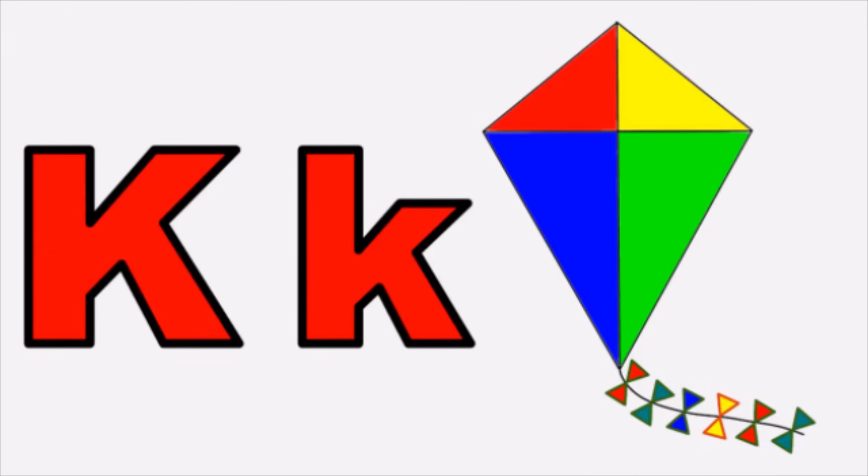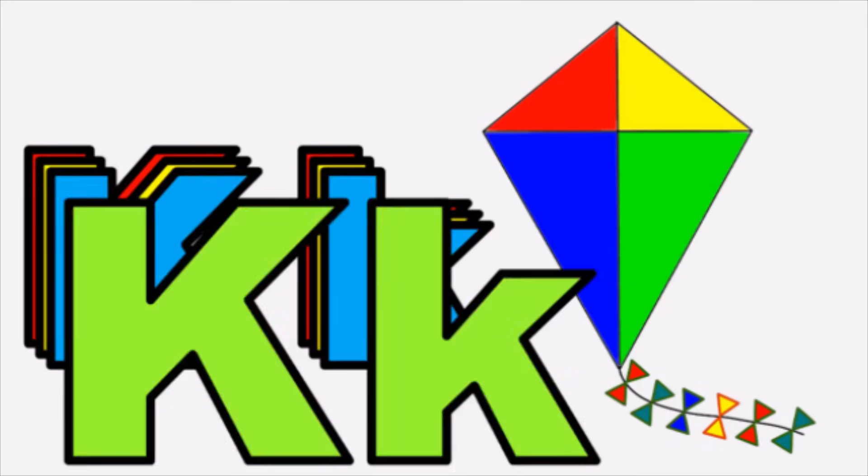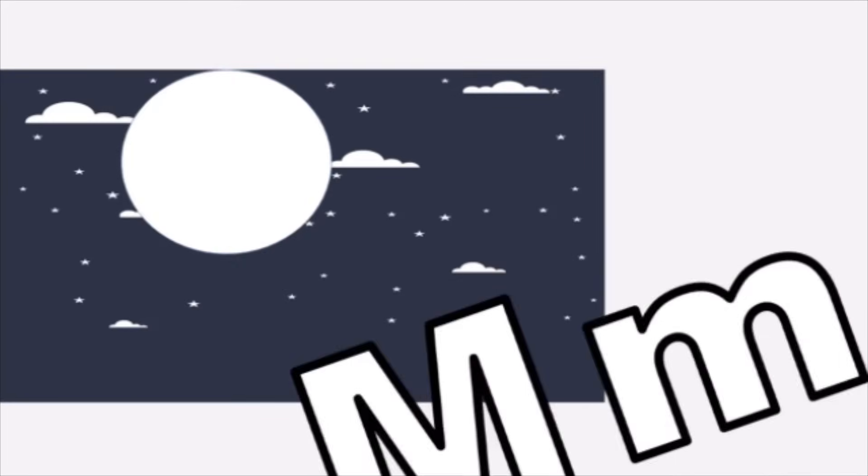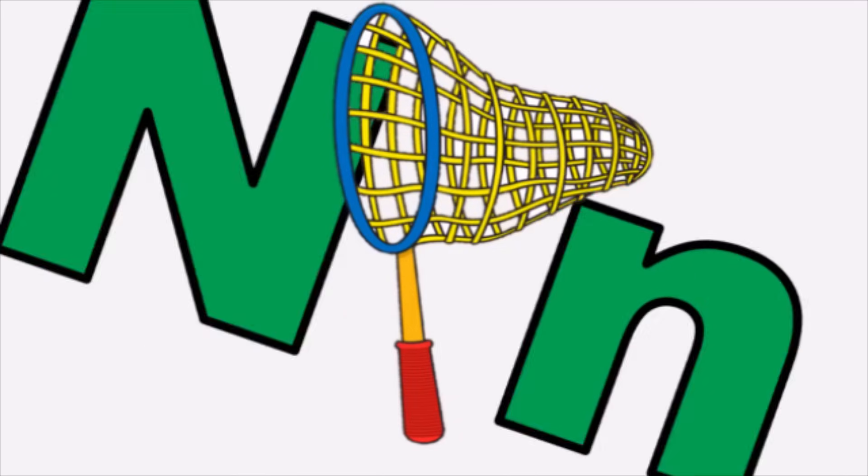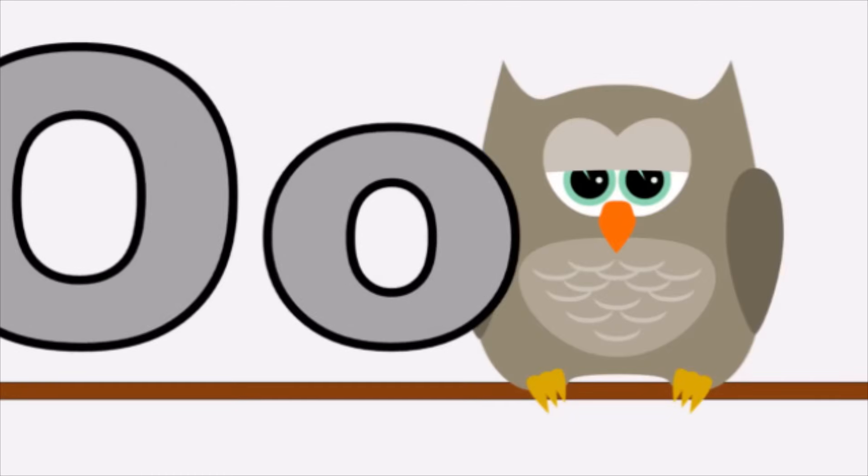K for Kite, k, kite. L for Lamb, l, lamb. M for Moon, m, moon. N for Net, n, net. O for Owl, o, owl.